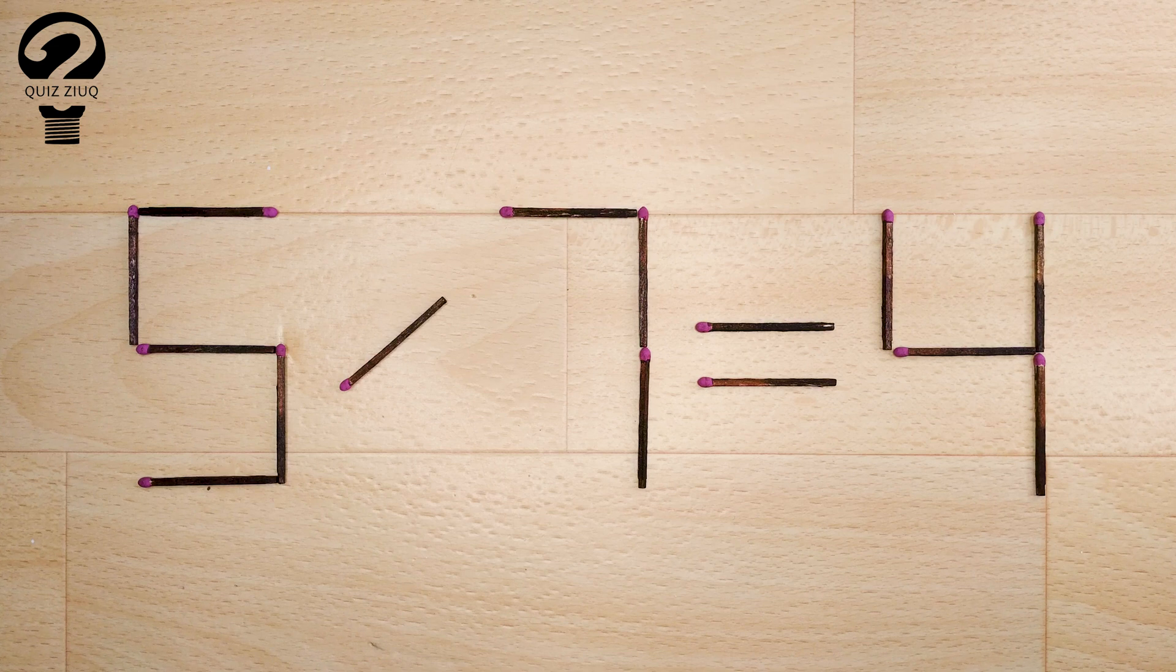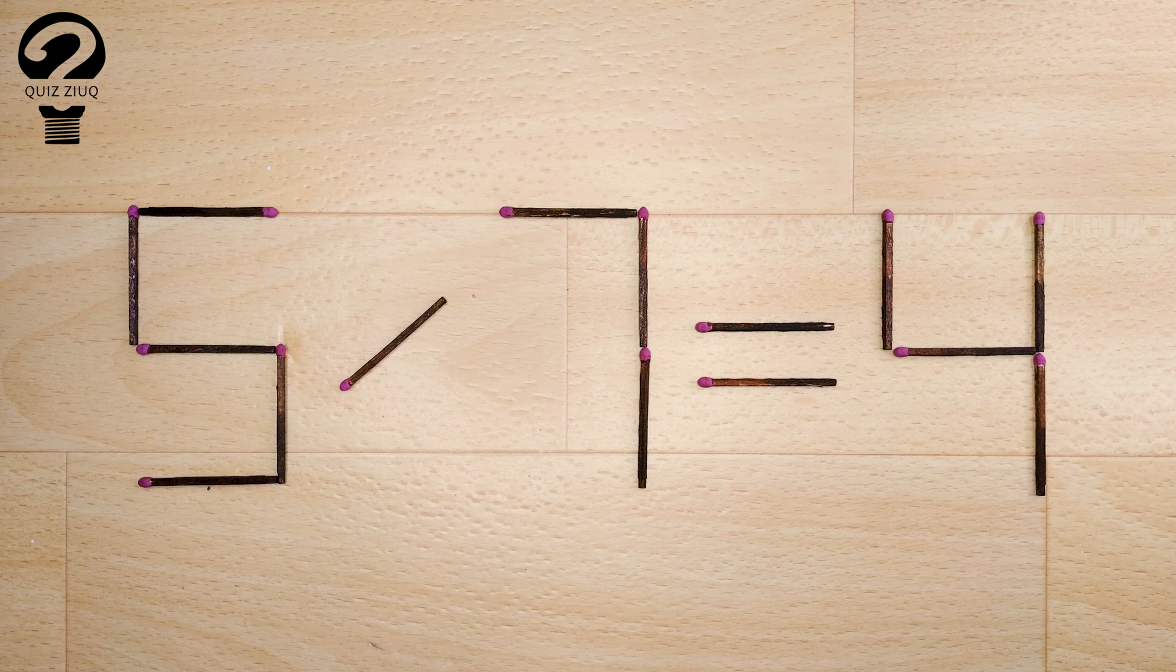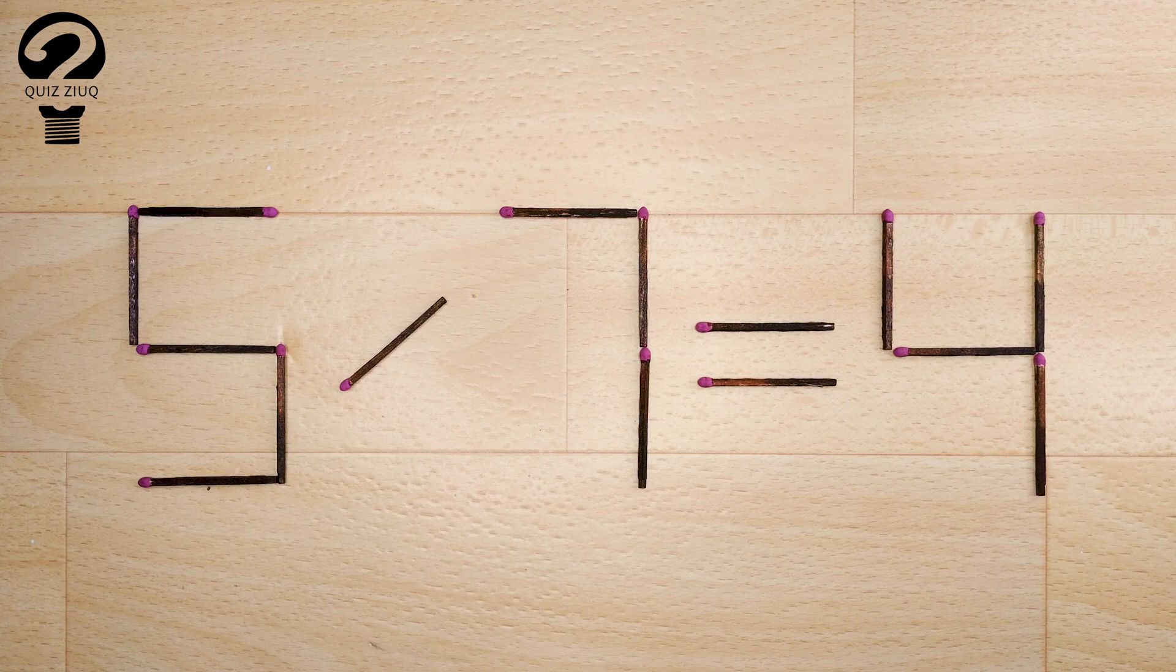Here's the next puzzle. We have the following equation: 5 divided by 7 equals 4. Our equation is incorrect. We need to move two matches so that our equation becomes correct.